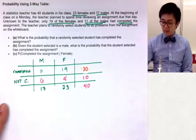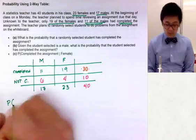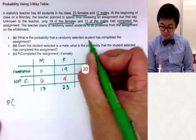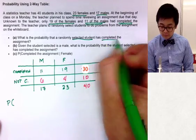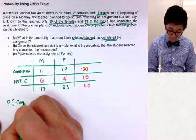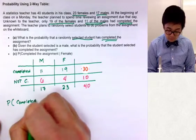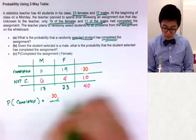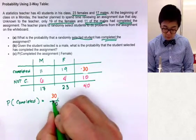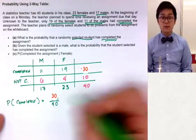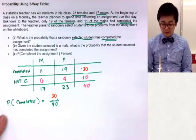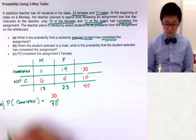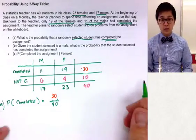Now let's answer the first probability question. We need to find the probability that a randomly selected student has completed the assignment. The number of students who completed the assignment is 30 out of the total of 40 students. So the probability is 30 out of 40. It's much easier to see this using the two-way table.